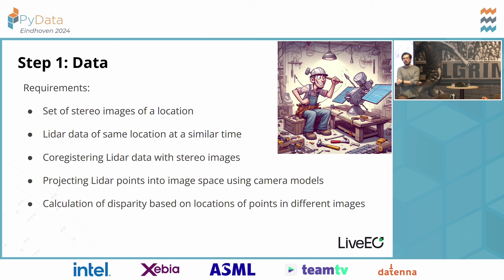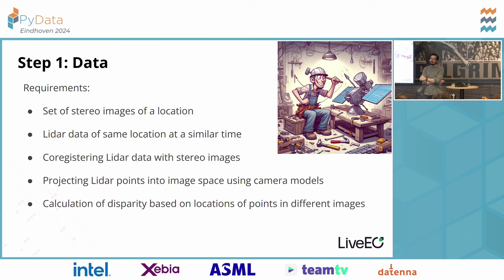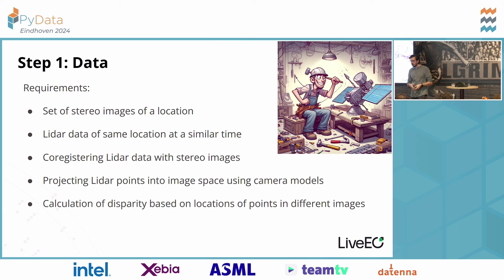Question: How long did the whole project take? Answer: The deep learning part — from when we started to first results — was maybe three or four months, but it built on work done before I joined the company on the classical method. For the first datasets we just had people sit and cross-reference archives looking for images and LiDAR data from the same time. Overall, order of months for the deep learning part, building on roughly a year of prior work.